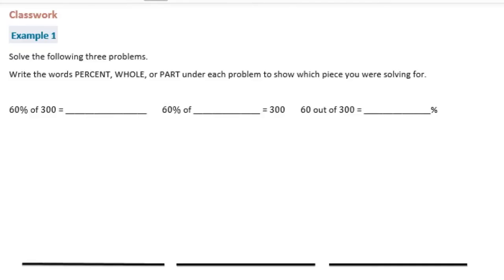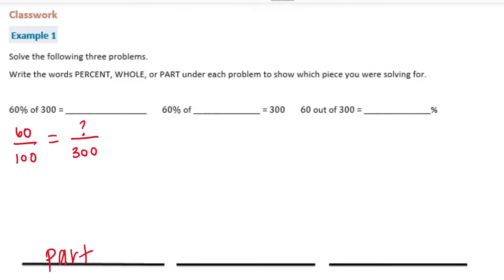So 60% of 300 is equal to what? We know that 60% as a fraction is 60 one-hundredths, and we're trying to find 60% of 300. So 300 is the whole, and we're trying to find what part of that it's equal to — so we're solving for the part. We don't need to do any reducing because 100 times 3 is 300, so all we need is 60 times 3. 6 times 3 is 18, so 60 times 3 is 180 — the part is 180.